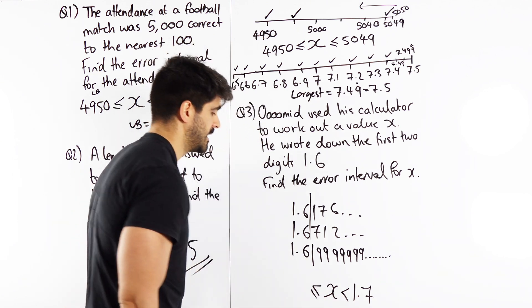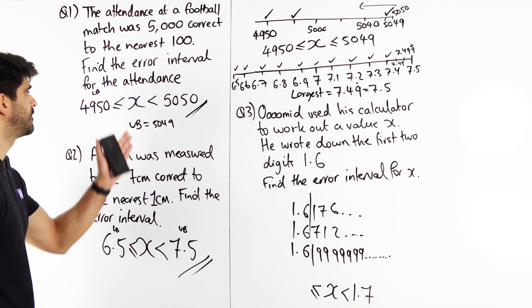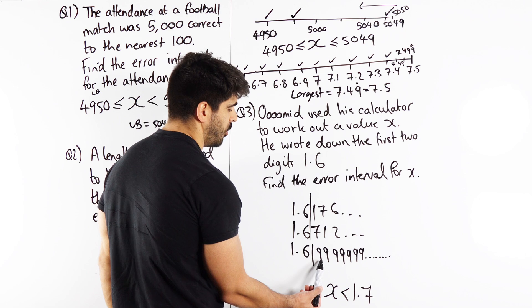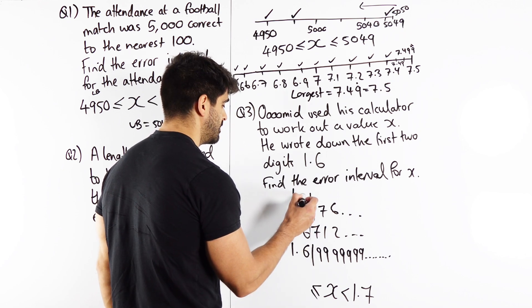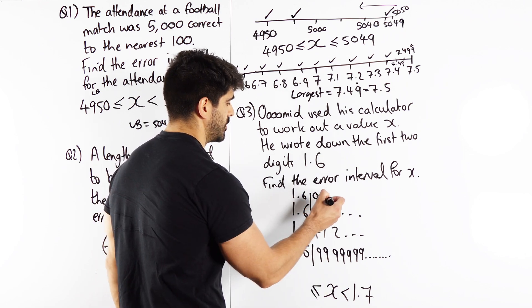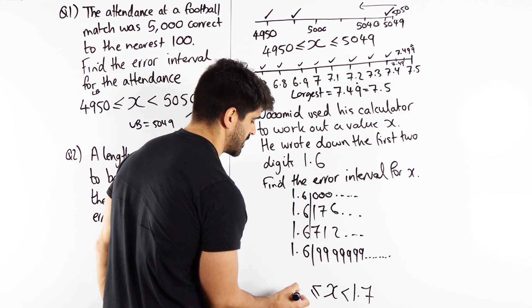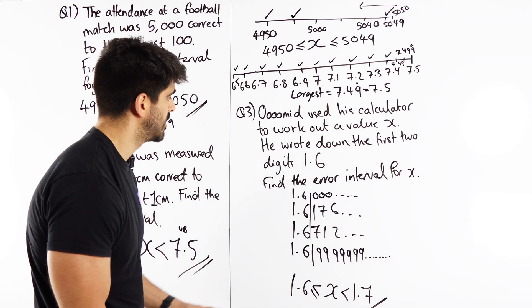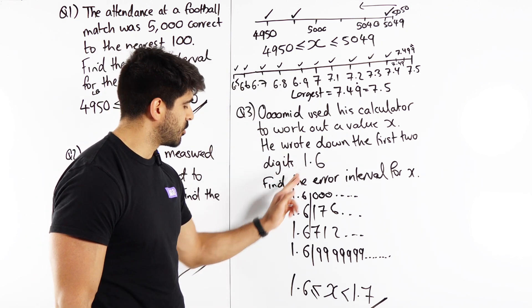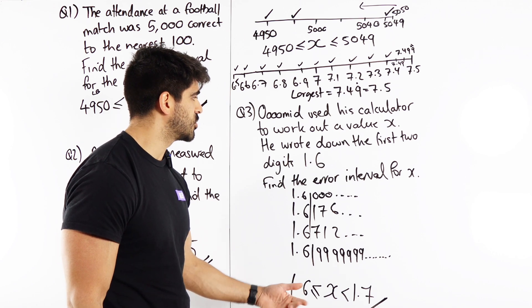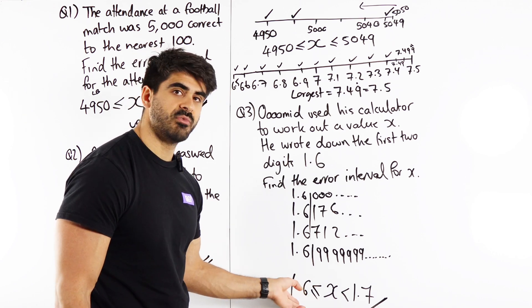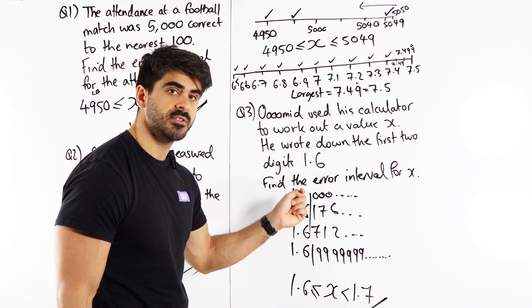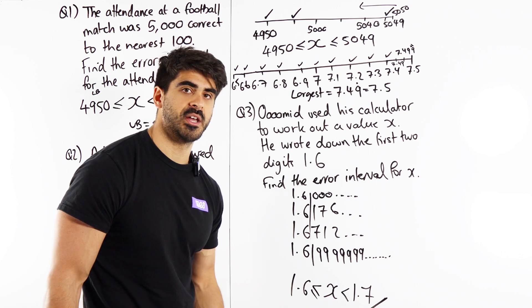So you can see for all of them it has the exact same format. But what would the smallest value be? Well just like we said the largest value would be 9, the smallest would be 0. And then we just keep putting 0s. And that just gives you 1.6. And that's very interesting when it comes to truncation because the lower bound is always equal to the number and then you just look at what you essentially read up to and you just add 1 to that value. So if it was, I don't know, 2.8, it would be 2.8, 2.9.